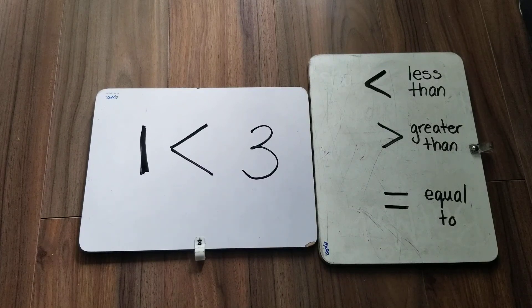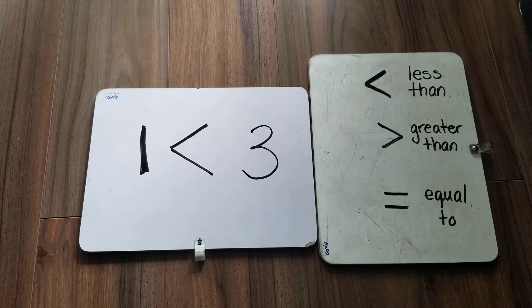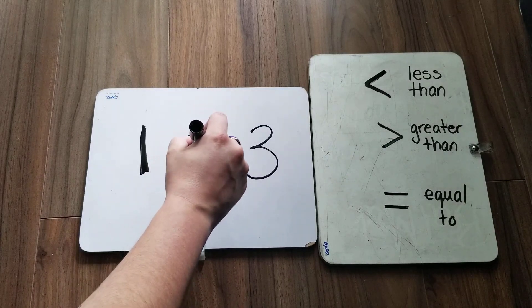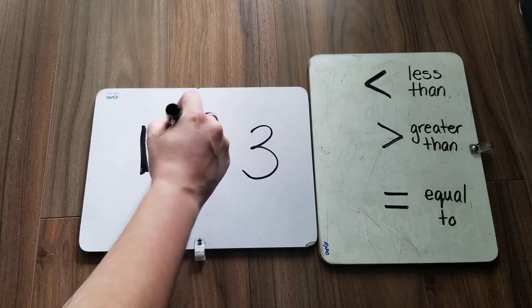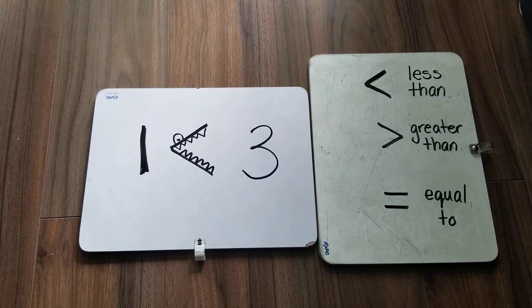These, you're often taught, look like alligators, and the alligator always eats the larger number. So if you imagine them like alligators with their little teeth, they always eat the bigger number because alligators are hungry and they want the larger animal.